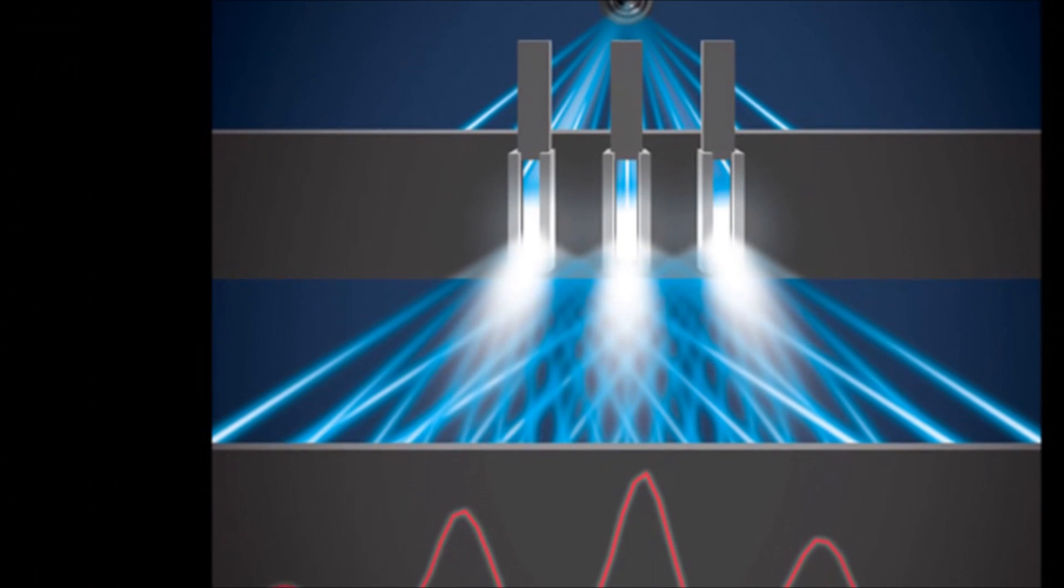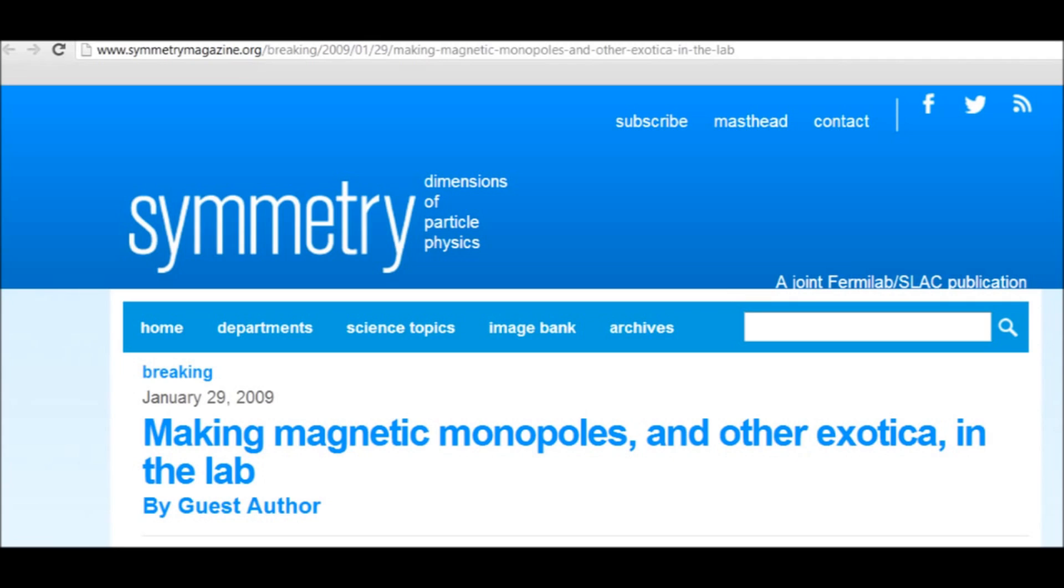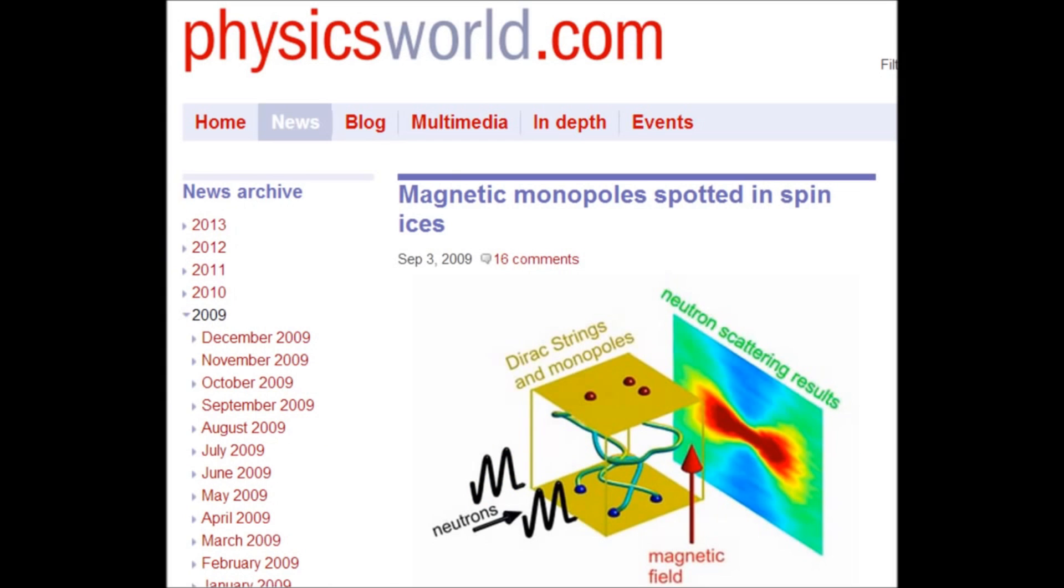AQ, if you're willing to dismiss the Big Bang theory over something this arbitrary, then you should also be willing to abandon gravitational, quantum, and atomic theory. Pointing to gaps in our understanding of a particular aspect of a theory does not constitute a compelling argument against it. In any case, magnetic monopole quasi-particles have already been found and experimented with in the field of condensed matter physics, and these particular species of monopole differ only superficially from the ones predicted by grand unification theories.